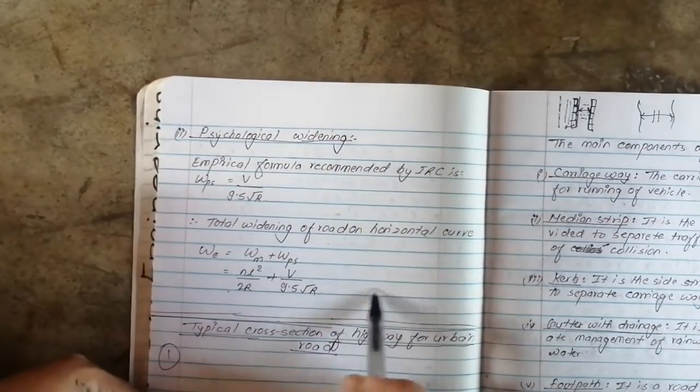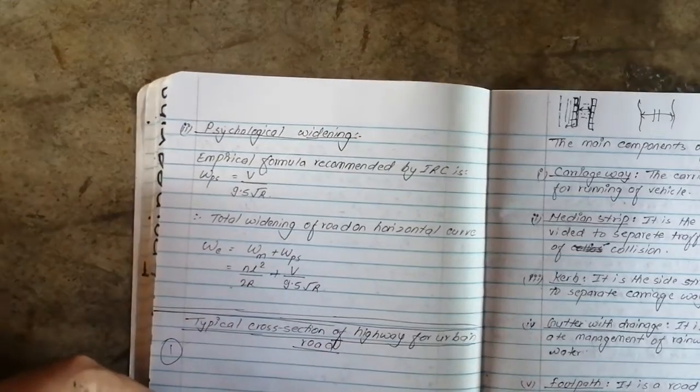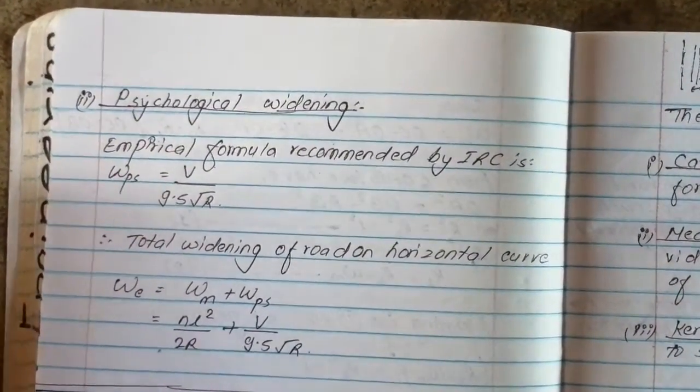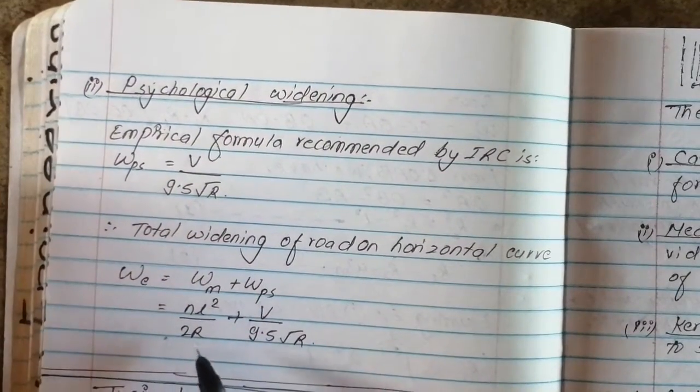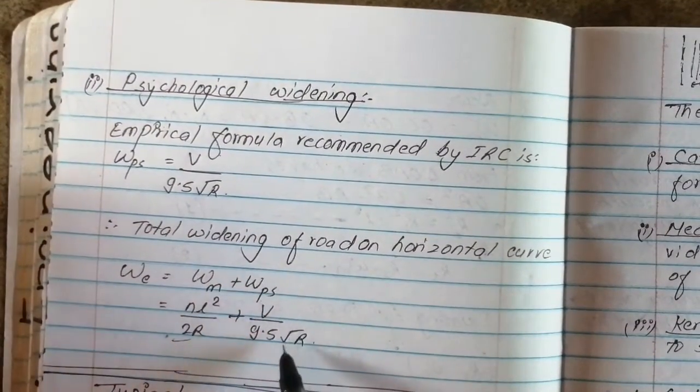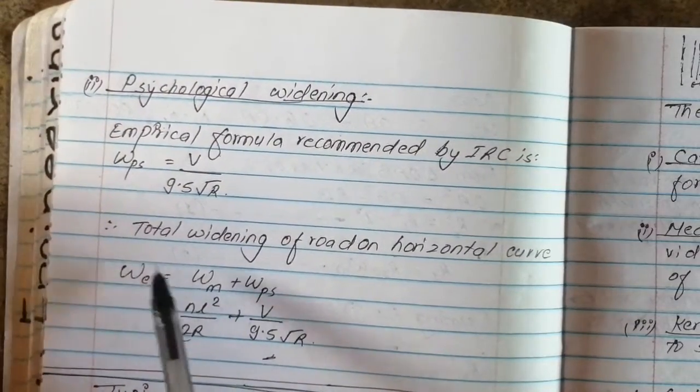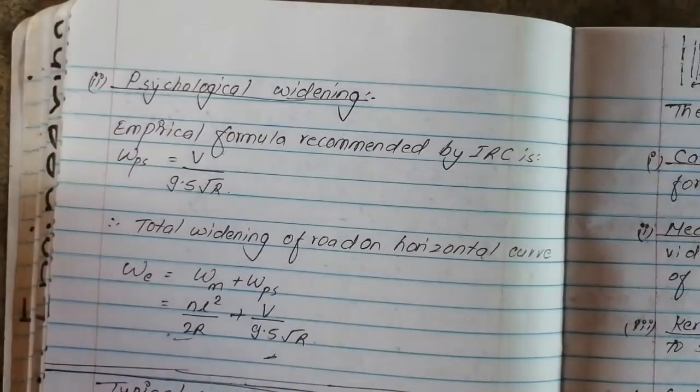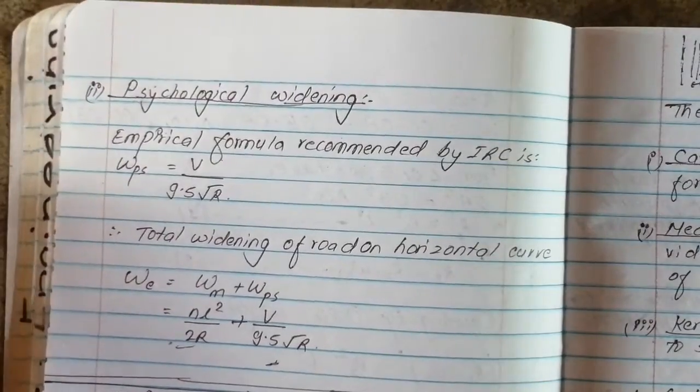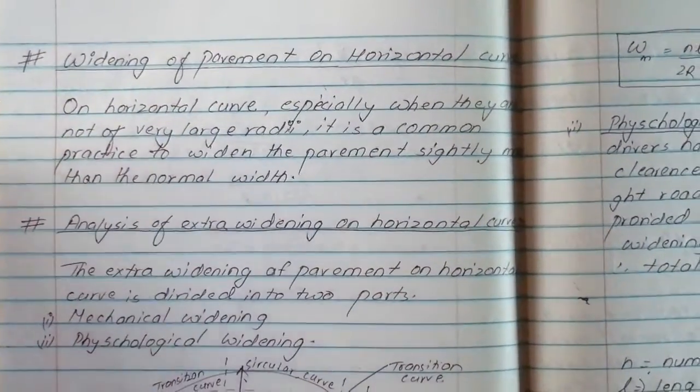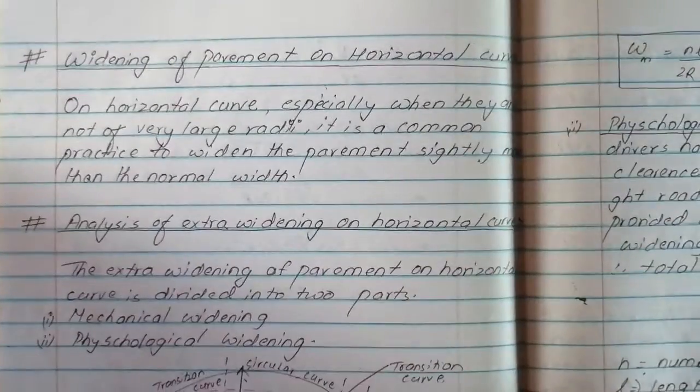Total widening of road on horizontal curve is WE equals WM plus WPS, where WM equals NL square by 2R. This is the mechanical widening, plus V by 9.5 square root of R. Total widening equals WM plus WPS. This is the value of total widening.